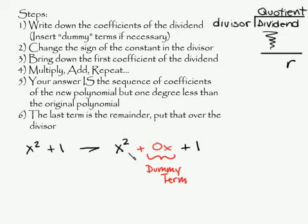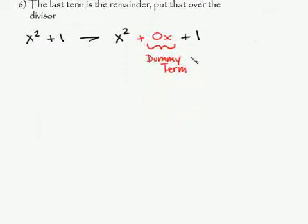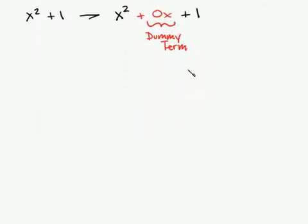Okay, so let me move this up a little bit. So what you're going to have now is this: your coefficient of 1 here, 0, and this is just a 1. So you're going to have 1, 0, and 1.